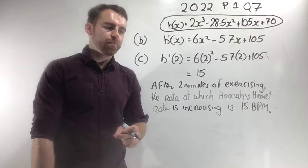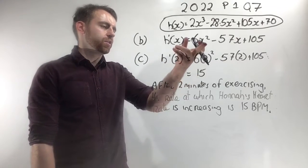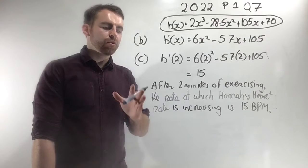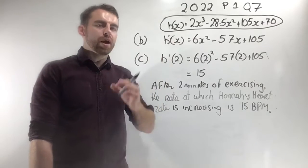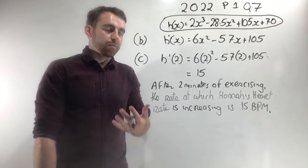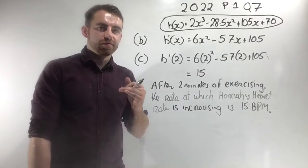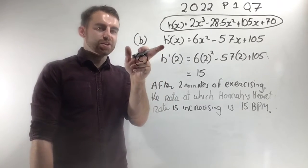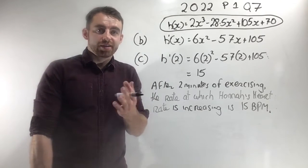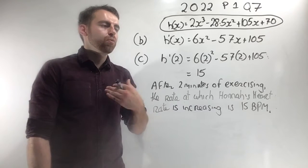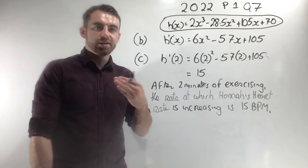In part c, we're asked to get the derivative when x equals 2. You just sub in 2 instead of x and you get 15. Then we're asked to explain what that means in context. Remember that h(x) represents the beats per minute of Hannah's heart, and the first derivative is the rate of change of the original function. So h'(x) represents the rate of change of Hannah's heart rate — in other words, how quickly her heart rate is increasing.